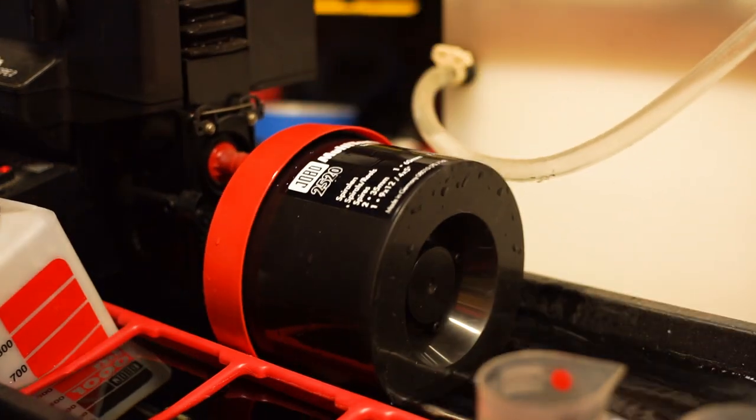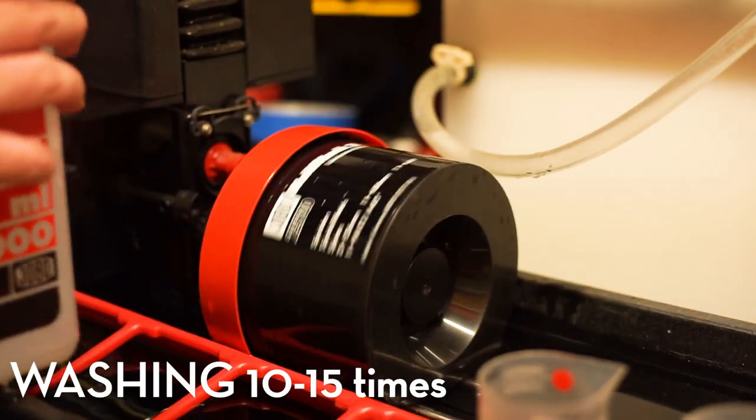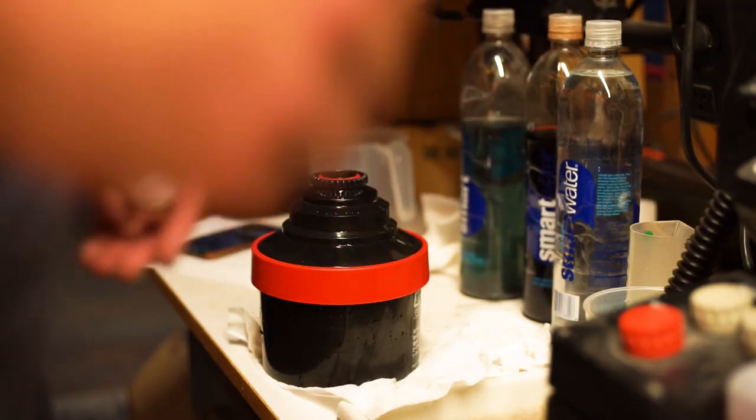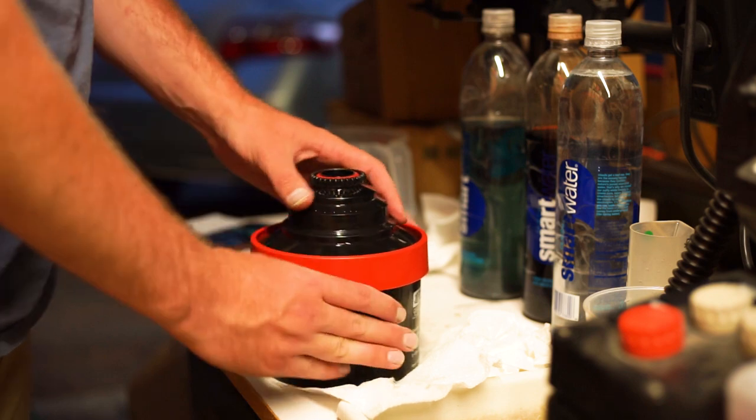After you empty out the blix, then you're gonna take some water and I do about 10 to 15 washes of water just to make sure that everything's clear. Then I open it up and it's light safe and clean.